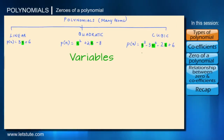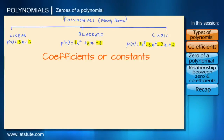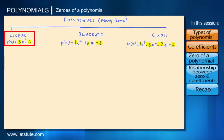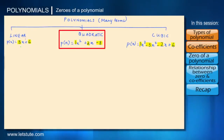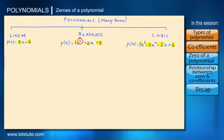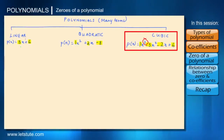Here we have just one variable, that is x. The numbers that we see before the variables are called coefficients or constants. The highest power for 3x plus 6 is 1, therefore it is a linear polynomial. The highest power here is 2, therefore it is a quadratic polynomial. And the highest power here is 3, therefore it is a cubic polynomial.